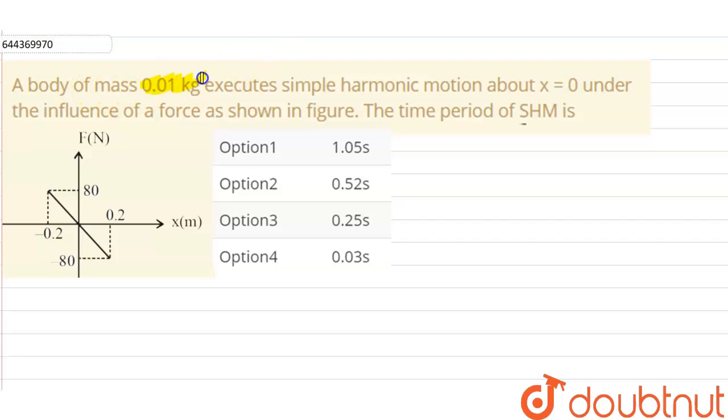Hello everyone, so our question is: a body of mass 0.01 kg executes simple harmonic motion about x equals 0 under the influence of a force as shown in the figure. The time period of the SHM is. We have been given that a body having a mass of 0.01 kg which is executing simple harmonic motion about x equals 0 under some influence of the force which is represented in the figure.